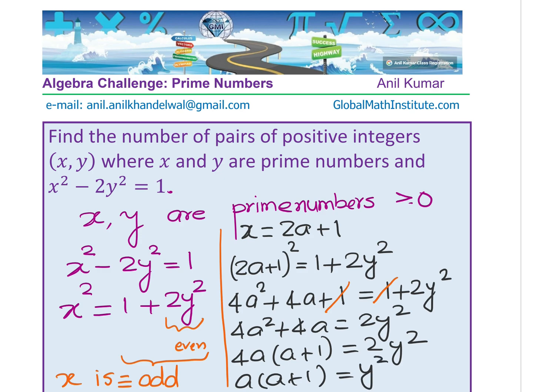Now that means what? Clearly that means 2 times a times (a + 1), so y is even. If y is even, what could be that prime number? So we get our solution. I think you got it.